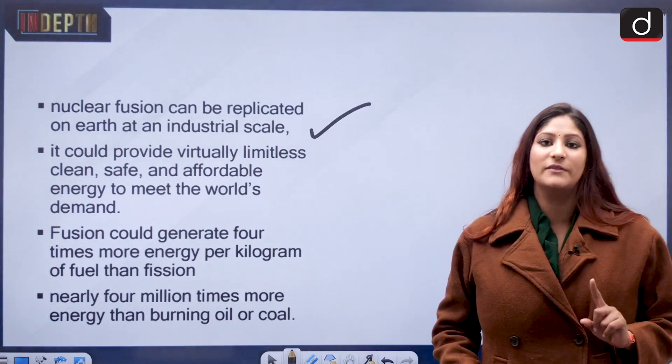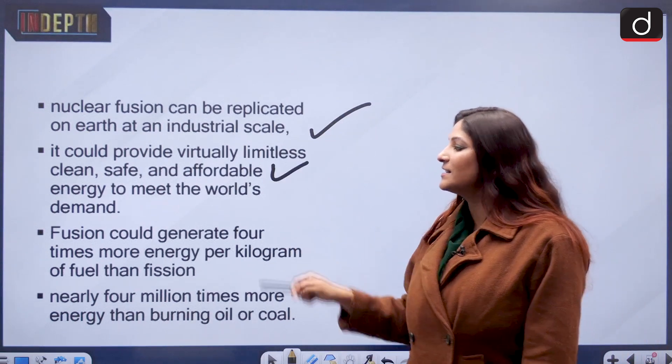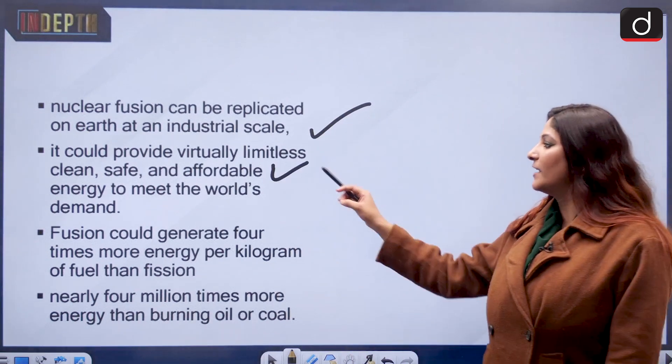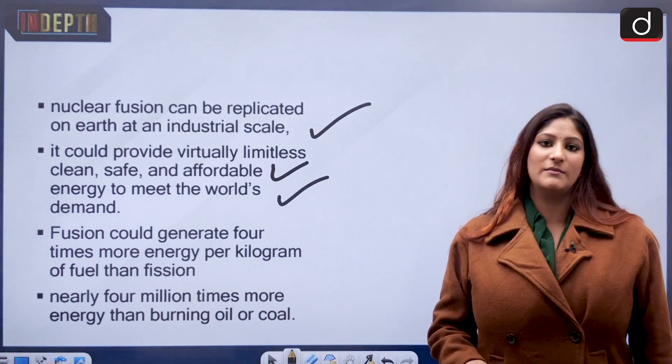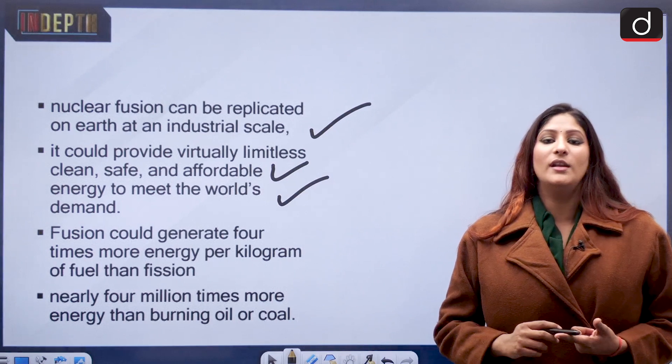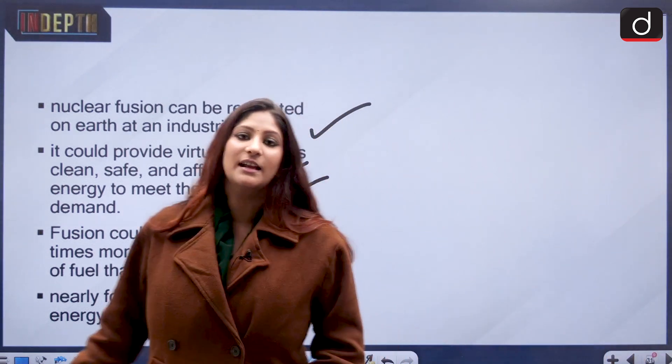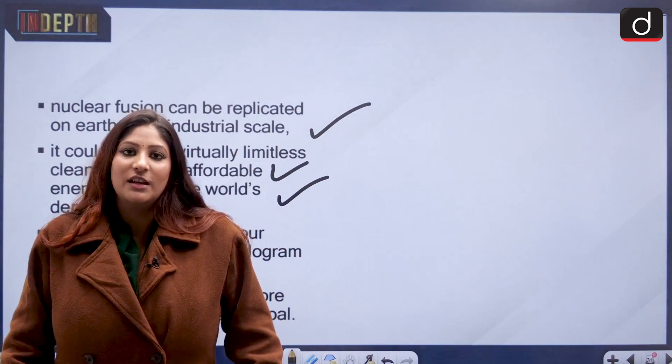This is one of the benefits it has. It can be mass produced and it could provide virtually limitless clean, safe, and affordable energy to meet the demands of the world. Right now we are dependent on coal. Coal is a source of traditional energy but it creates a lot of damage to the environment.